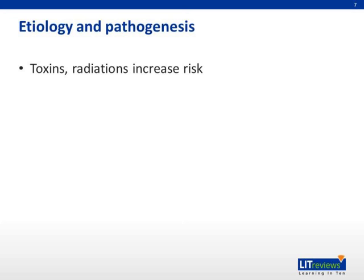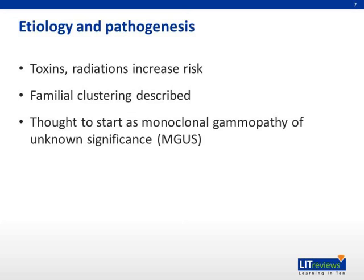Some evidence shows increased incidence of myeloma after exposure to chemicals like benzene and ionizing radiation. Familial clustering of myeloma patients has also been described. Most cases of myeloma, in fact, start as monoclonal gammopathy of unknown significance, or MGUS, as it is popularly known.